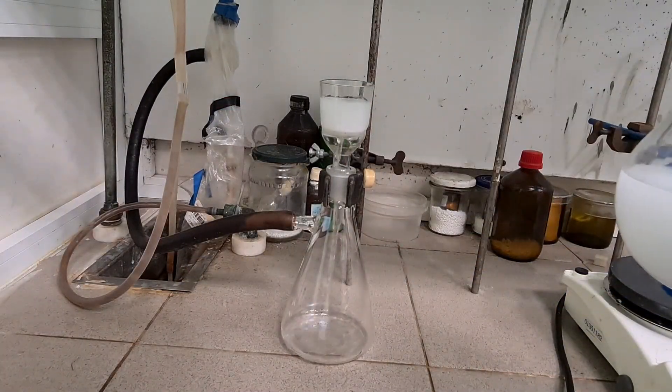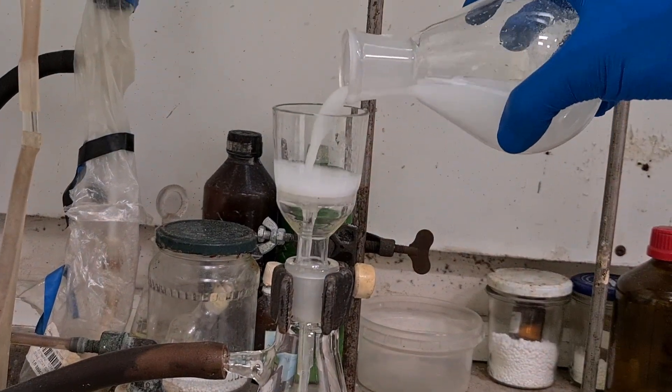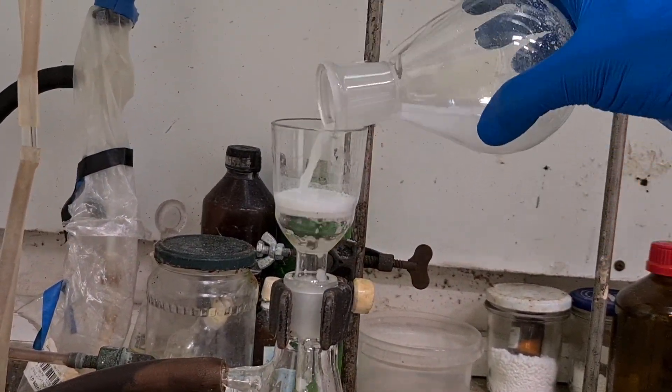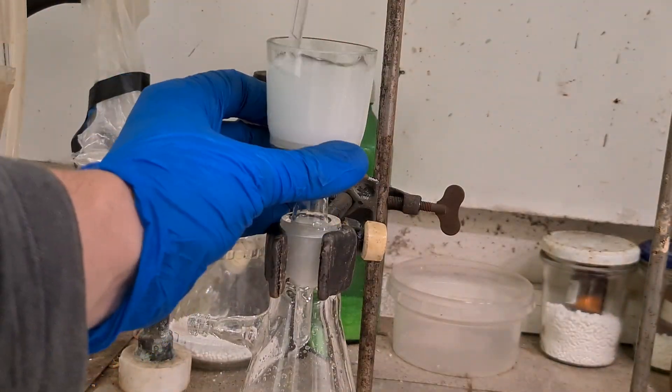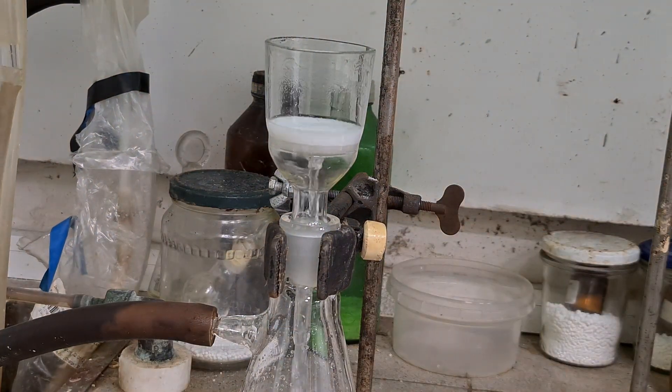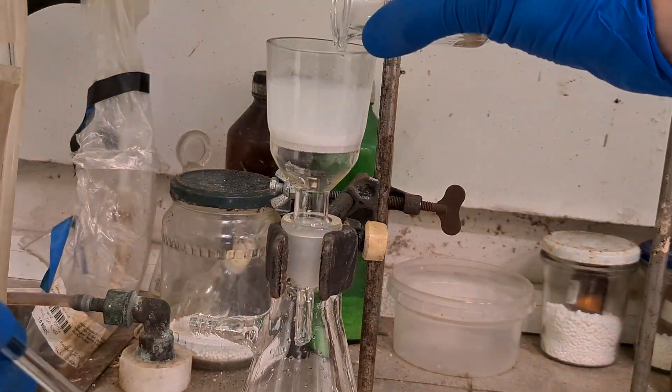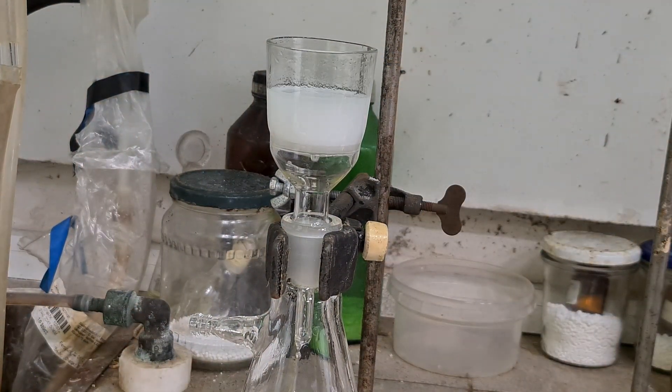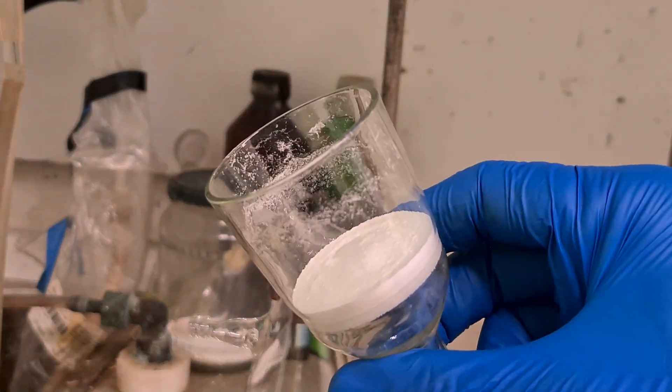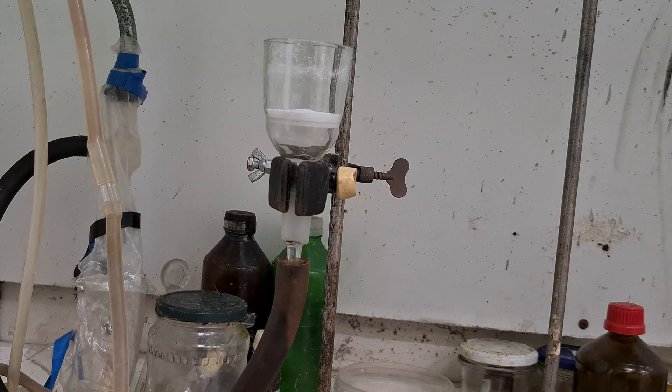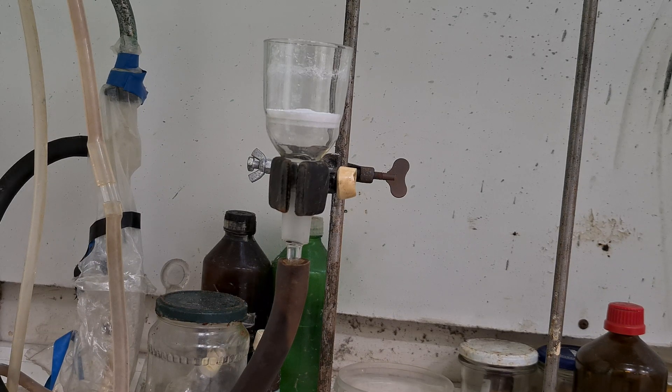Next, you're supposed to filter precipitate on a glass filter. Then, wash couple of times with boiling ethanol to remove remaining thiourea. And dry TUDO in airflow during 2 hours.